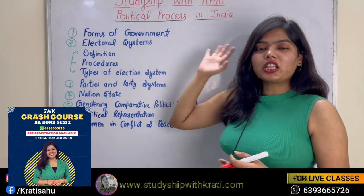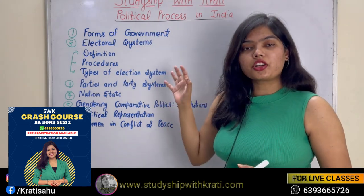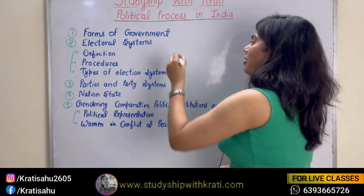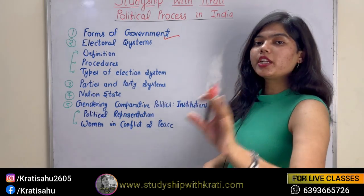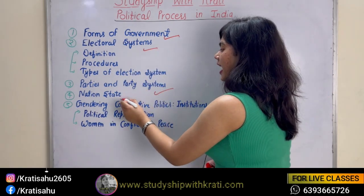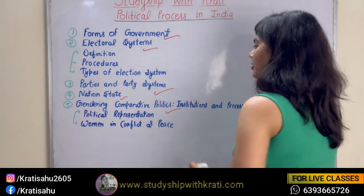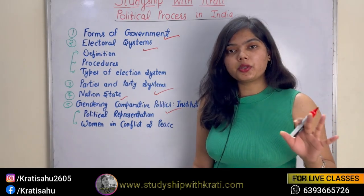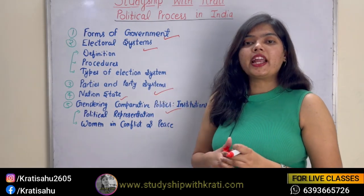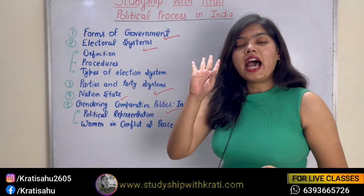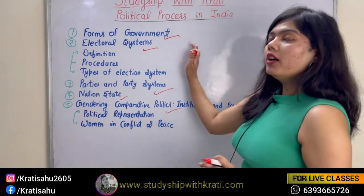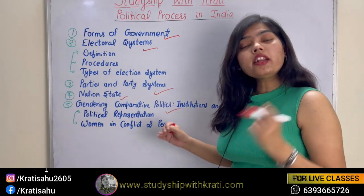Let's talk about Political Process in India. The full paper name is Political Process and Institutional Structures in India — a semester 4 paper. Your units are: Forms of Government, Electoral System, Parties and Party System, Nation-State, and Gendering Comparative Politics — five chapters total. My suggestion: cover any four chapters, meaning you can take the risk of skipping one.